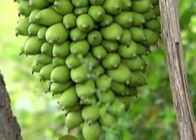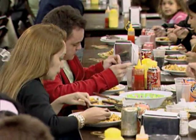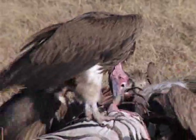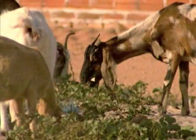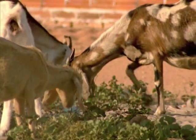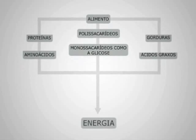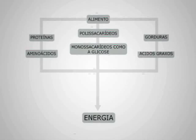Um desses processos é a alimentação. É através dela que os seres vivos extraem as moléculas orgânicas essenciais para obtenção de energia e para formar seus tecidos e células. A obtenção de energia é possível graças à oxidação das moléculas orgânicas contidas nos alimentos. Essa energia será usada em todos os outros processos vitais do organismo.